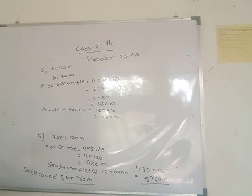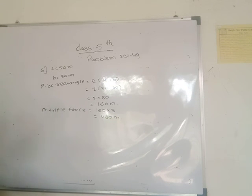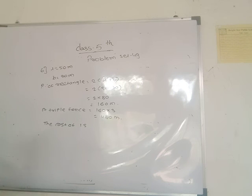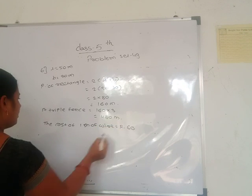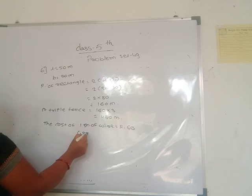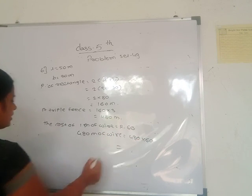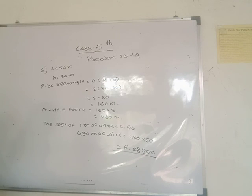The cost of 1 meter of wire is ₹60. So cost of 480 meter of wire = 480 × 60 = ₹28,800. The total cost of fencing is ₹28,800.